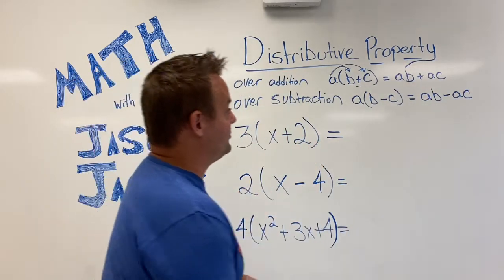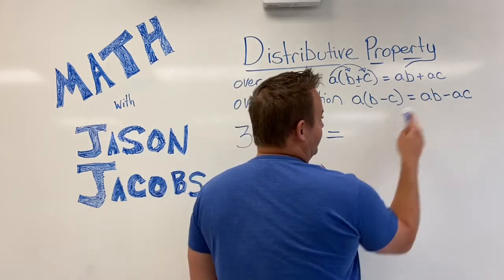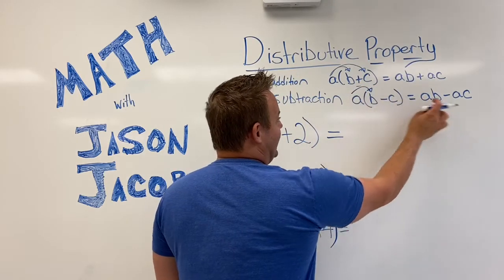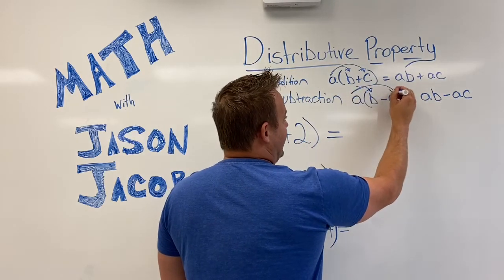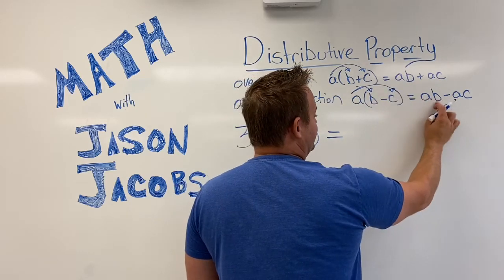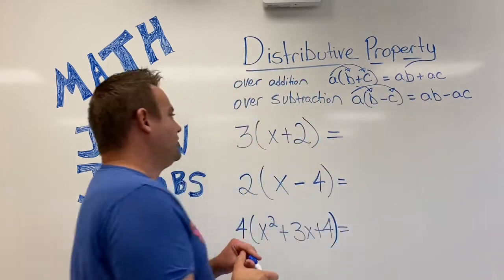Now the distributive property over subtraction will have a subtraction sign right here. So you go a times b minus a times c, a times b minus a times c. So let's look here.